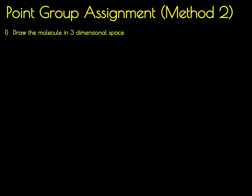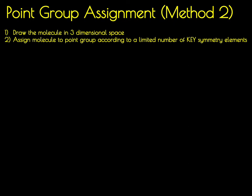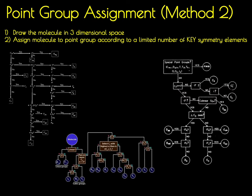Instead, we're going to use a simpler and more systematic way to determine molecular point groups. In this method, you first draw the three-dimensional shape of the molecule, then identify only a few key symmetry elements. This method relies on the fact that point groups can be assigned using only a few key symmetry elements. It is very systematic, and a large number of flowcharts have been developed to walk you through the key questions needed to identify the correct point group.